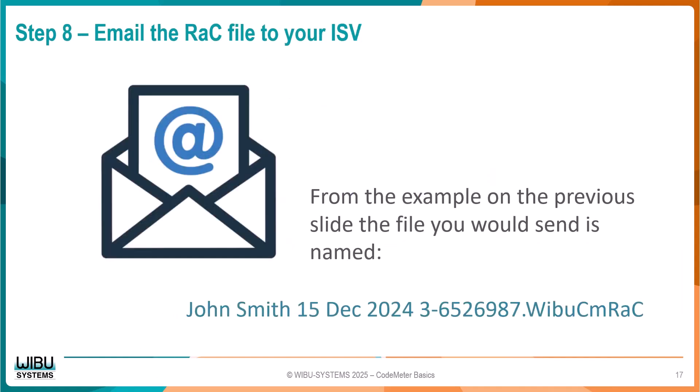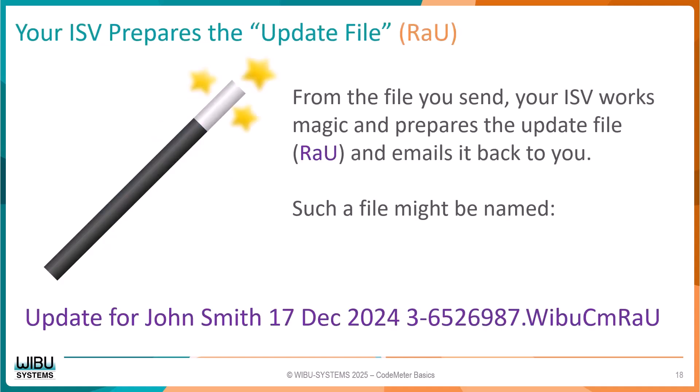The next step is to follow the instructions you receive from your software provider on how to send the RAC file back to them. Send the file. Your ISV will now work magic, and by using the RAC supplied by you, a unique update file is generated. No matter what your ISV names this file, the extension will always be .WibuCM-RAU — this will allow you to find it in your system. In this example, the update file is named Update for John Smith, 17 December 2024, with the dongle serial number 3-652-6987.WibuCM-RAU. The ISV will then send the RAU file back to the user.